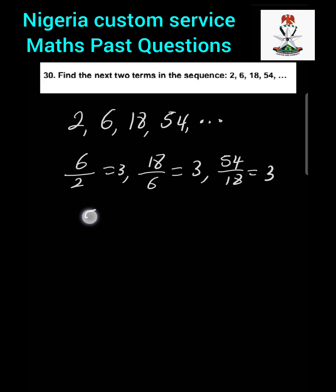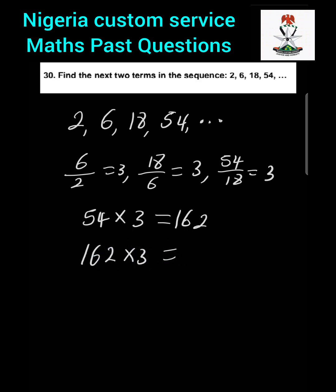So the next term is 54 multiplied by 3, which equals 162. The term after that is 162 multiplied by 3, which equals 486. Therefore, the next two terms in the sequence are 162 and 486.